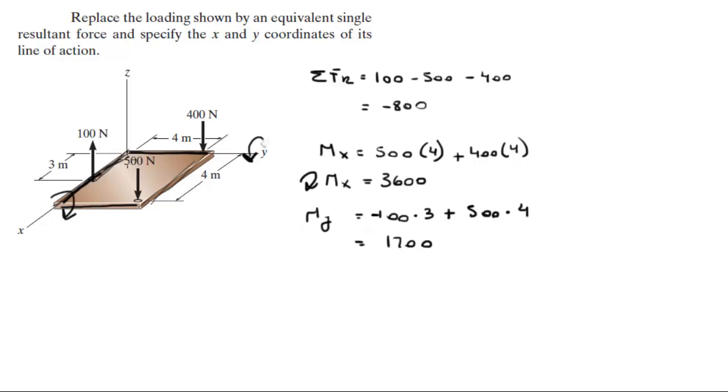So to find the coordinate where the resultant force of 800 will be acting, 800 going down on the z-axis, the moment in the x is equal to the resultant force times the y coordinate.